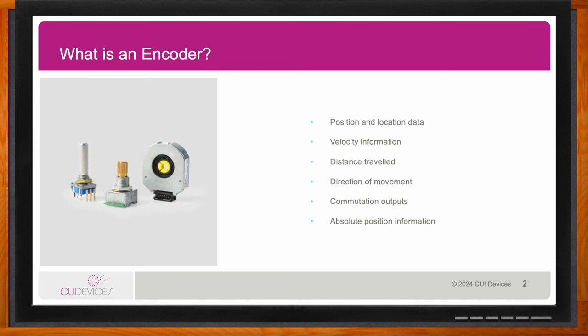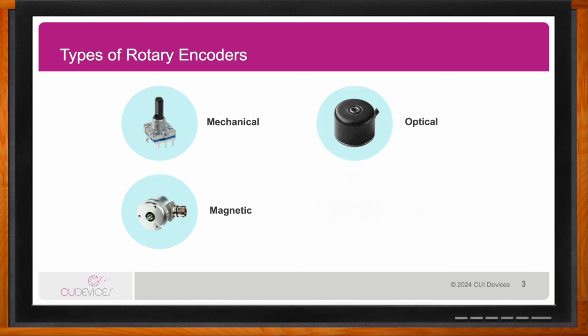There are different kinds of rotary encoders — different types based on the technology used. These four are the primary types: mechanical encoders, which are the most rudimentary; optical encoders, which are definitely the most prevalent in the industry; magnetic encoders, also very common; and then capacitive encoders, which are growing in popularity and fit a niche within that ecosystem. But with each technology, they all get you to the same motion feedback, same type of outputs and information — just different ways of capturing that rotary motion.